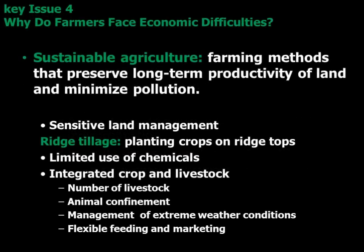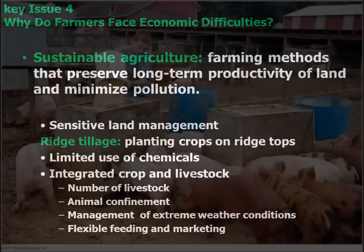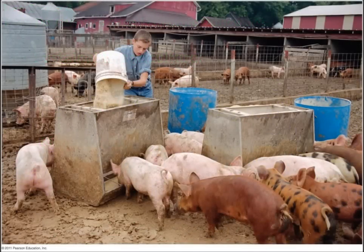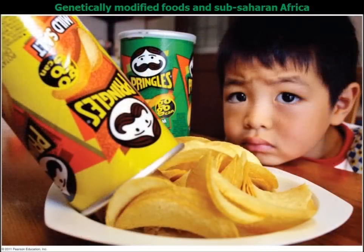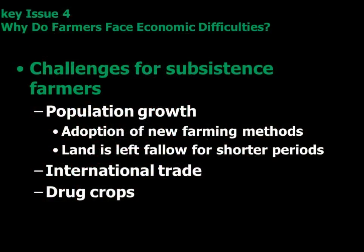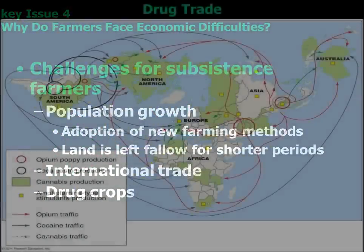Look at why we use crop rotation and the idea of sustainable agriculture, where we use integration of crops and livestock. We don't use very many chemicals and we're sensitive to land management — those kinds of things.